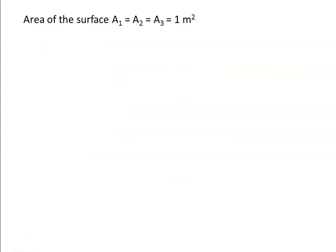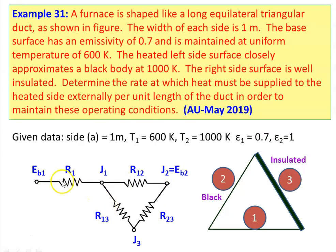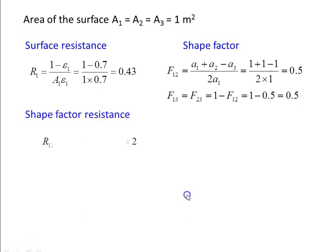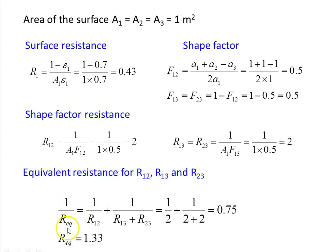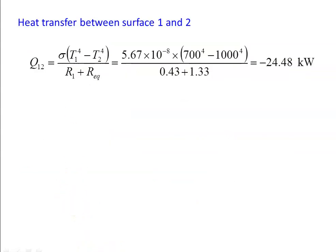For the circuit arrangement, we calculate the equivalent resistance. The equivalent resistance is given by: 1 over R_equivalent equals 1 over R12 plus 1 over (R13 plus R23). Substituting values: 1 over 2 plus 1 over (2 plus 2) equals 0.75, so R_equivalent equals 1.33. The heat transfer between surface 1 and 2 equals sigma times (T1 to the power 4 minus T2 to the power 4) divided by (R1 plus R_equivalent). Substituting 5.67×10⁻⁸ times (600⁴ minus 1000⁴) divided by (0.43 plus 1.33) equals minus 24.48 kW.